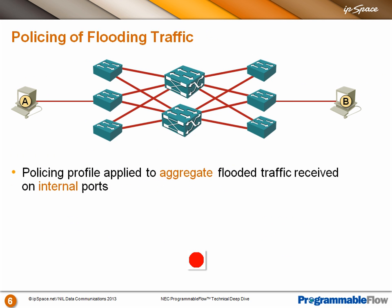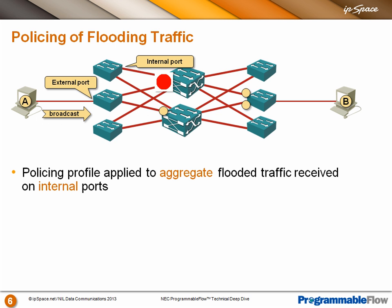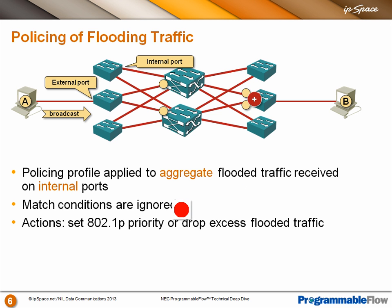The first tool — and this is an extension of OpenFlow, not native OpenFlow — is policing of flooding traffic. We monitor the internal ports, and if we're getting too much flooded traffic from internal ports, we start to drop it. The external port is separate; we only monitor internal ports. If different broadcasts are arriving to a switch, they are added together so we monitor the aggregate of all flooded traffic. Match conditions are ignored; we're only interested in flooded traffic, and we can either set the priority or drop it.